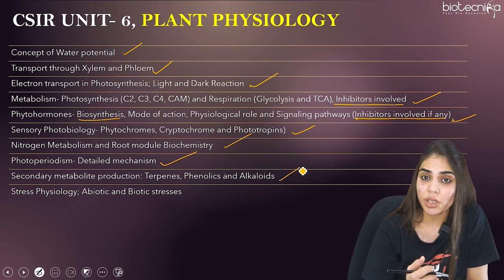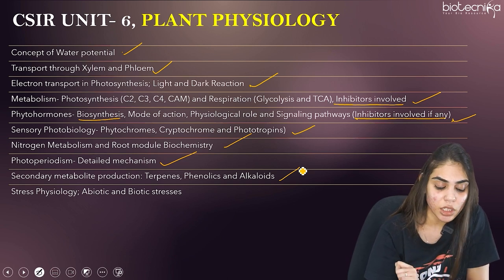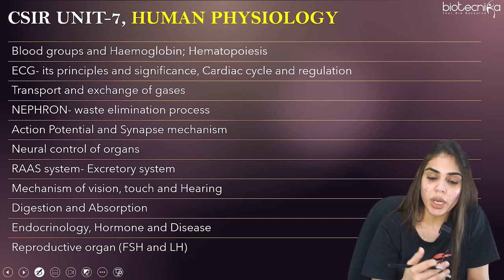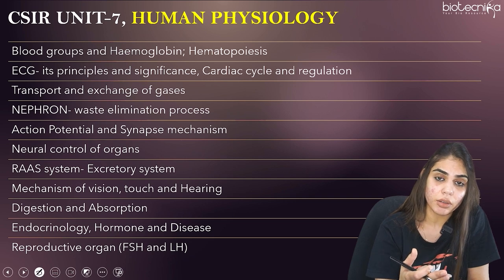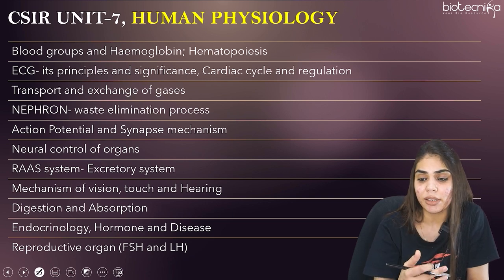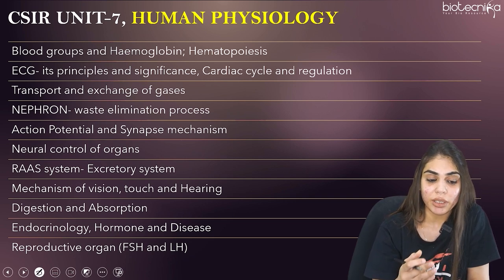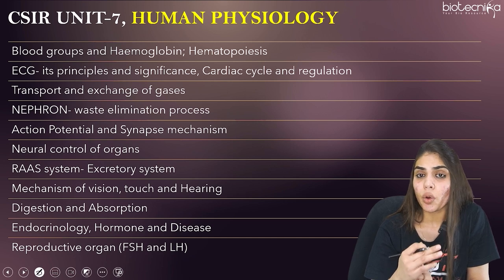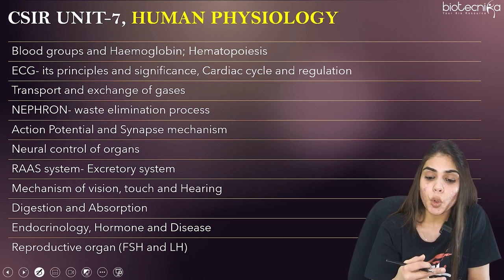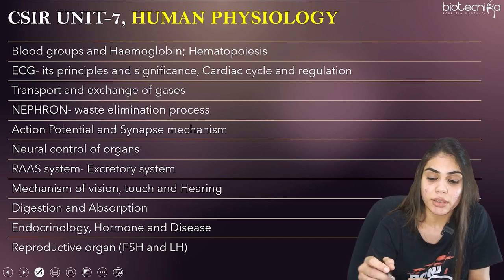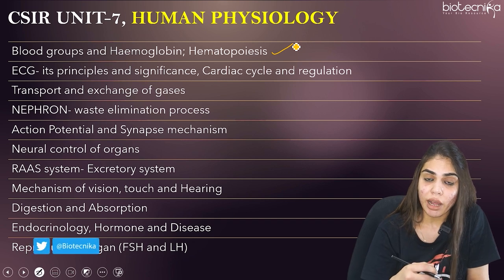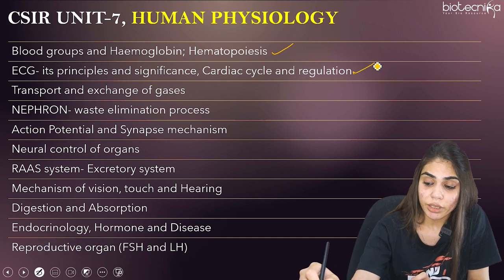Coming to Unit 7, Human Physiology — students often skip this unit, but if you focus on the important topics you can prepare it. The first is blood groups — know the blood group system, hemoglobin, its positive and negative regulation, and the process of hematopoiesis. Also learn the ECG graph, its principle and significance, and how the cardiac cycle is regulated.